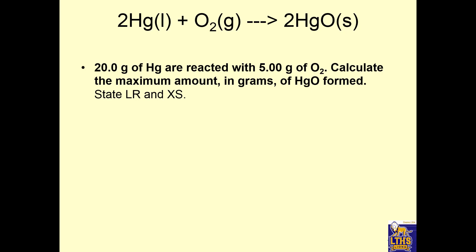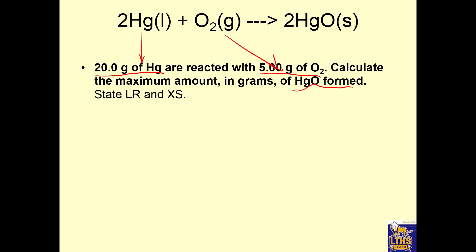Check it out — it's a problem. It says 20 grams of Hg, that's a reactant, and 5 grams of O2, that's a reactant. What kind of problem do we have here? A limiting reactant problem. Our goal is to figure out how much HgO can form, and we have to state the limiting and excess reactant.